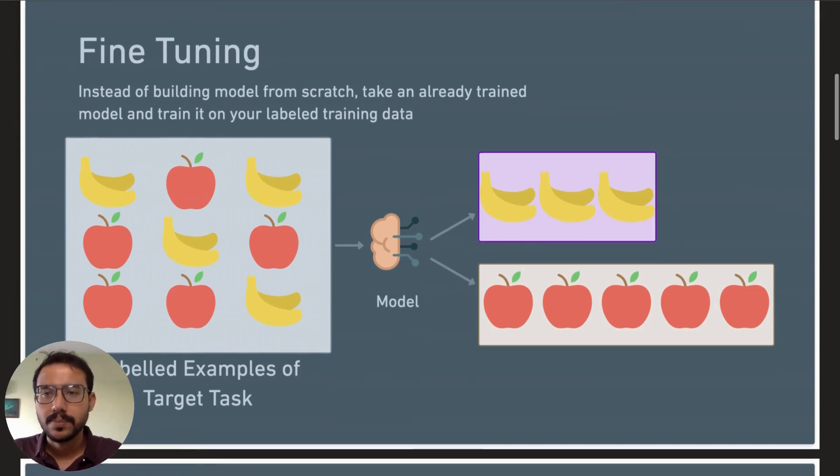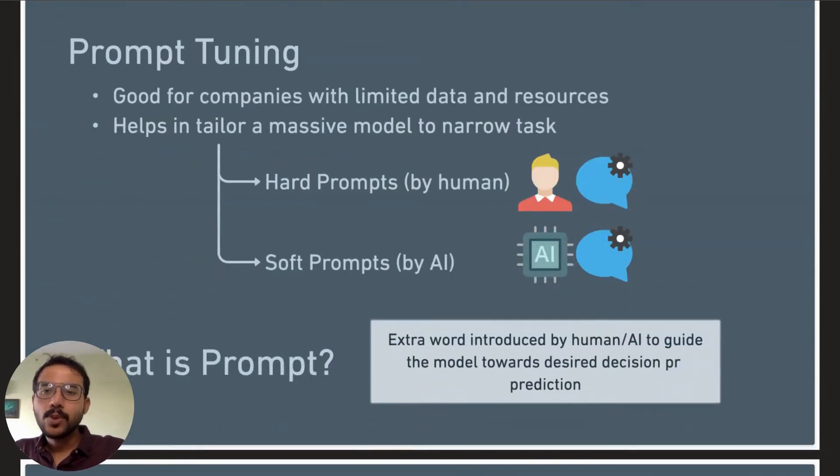However, a more energy efficient and simpler technique known as prompt tuning has emerged as an alternative to fine-tuning. Imagine you've got this huge all-knowing AI model at your disposal, but you don't have an endless supply of labeled examples. So what do you do? You use prompts. Prompt tuning allows companies with limited data to customize a massive model to a narrow task without the need for extensive labeled examples. Instead, specific prompts are provided to give it task-specific context. A prompt is just an extra word or number introduced by humans or AI to guide the model towards a desired decision or prediction.